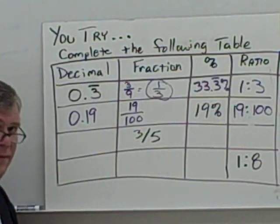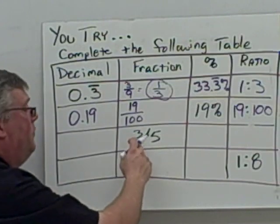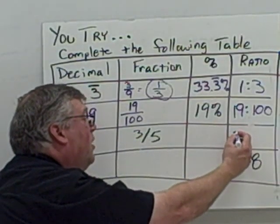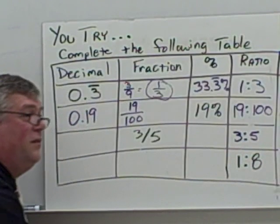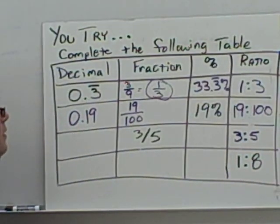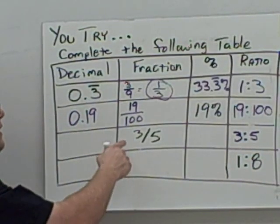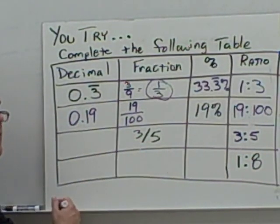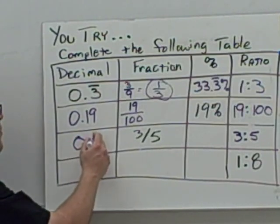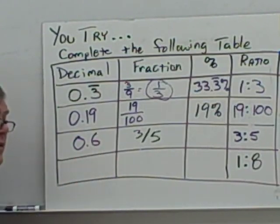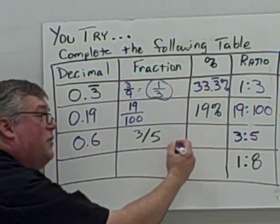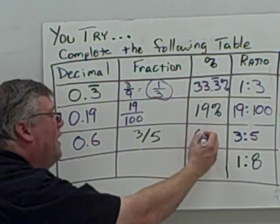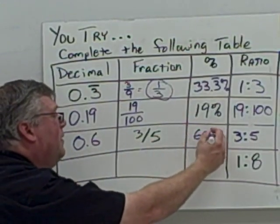Here we're given three-fifths. The easiest conversion is from three-fifths to the ratio: just 3 colon 5, replacing the fraction bar with a colon. Then for the decimal, 3 divided by 5 in the calculator gives 0.6. To convert to percent, multiply by 100 — move the decimal point two places to the right — and you get 60%.